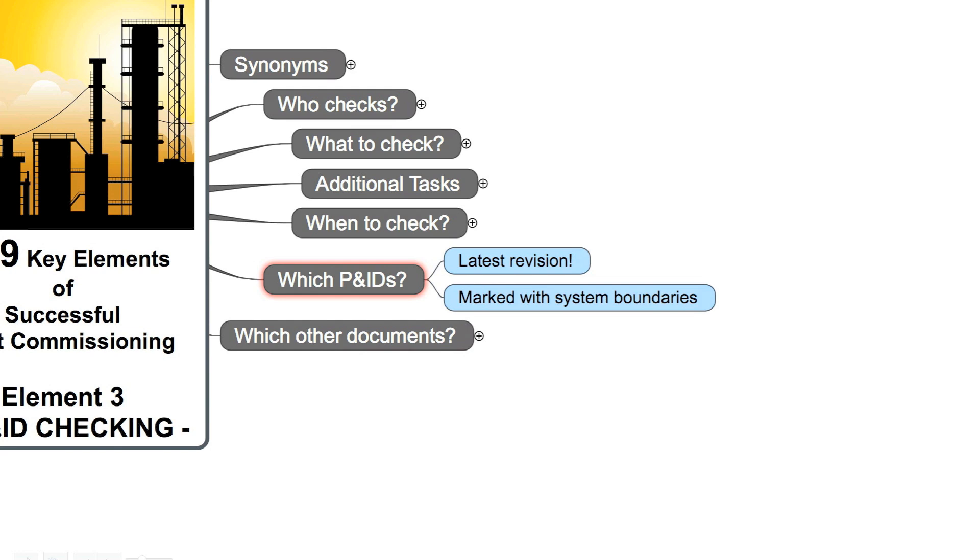Which P&IDs should we use? The most important rule is to use the latest revision only. All P&IDs should be marked with the system boundaries.